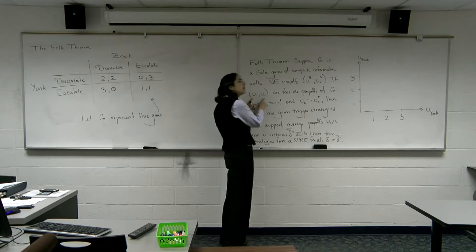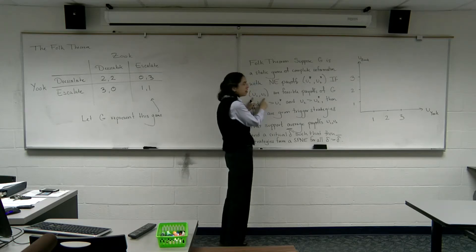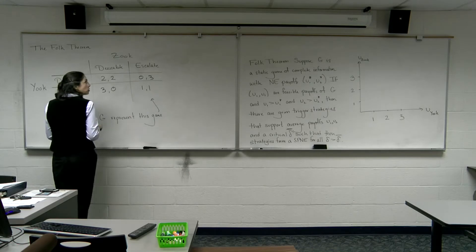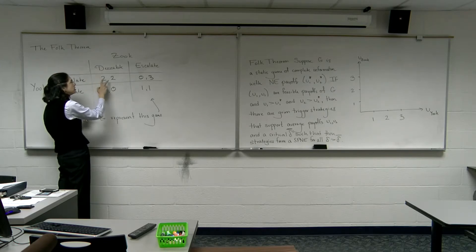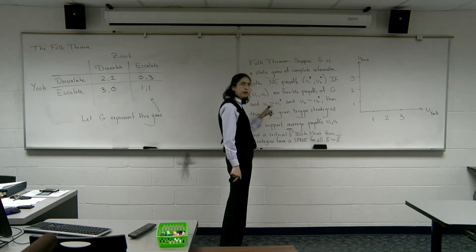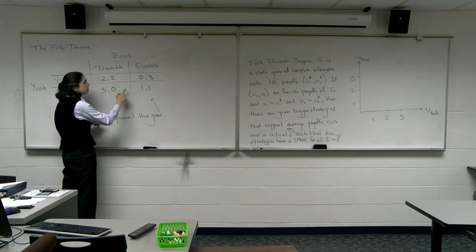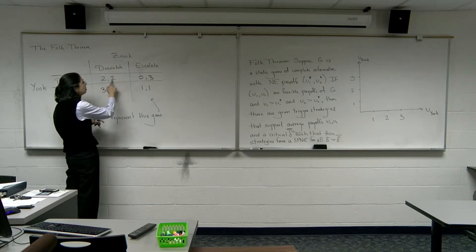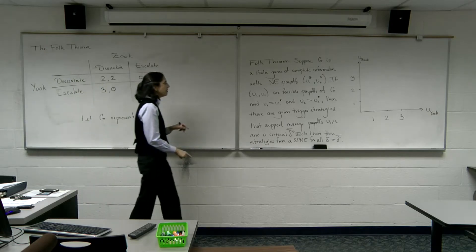If u1 and u2 are feasible payoffs of g — this doesn't mean some kind of equilibrium or strategic decision-making, it just means it could happen — for example, (2,2) from last time when both players de-escalate: u1 = 2, u2 = 2 are feasible payoffs. And if u1 is strictly greater than u1* and u2 is strictly greater than u2* — two is greater than one — then the conditions are satisfied.